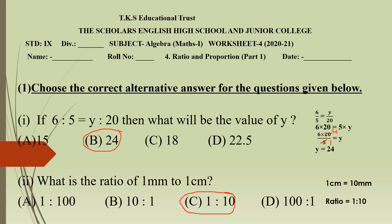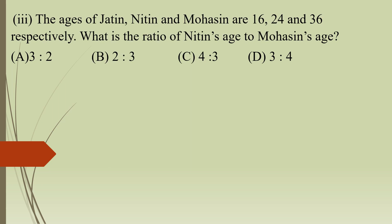Now let's move to the next question. In the third question, the ages of Jatin, Nithin, and Mohsen are 16, 24, and 36 respectively. What is the ratio of Nithin's age to Mohsen's age? Nithin's age is 24 and Mohsen's age is 36, so the ratio is 24 is to 36. Both are divisible by 12: 24 divided by 12 and 36 divided by 12. The answer in simplest form is 2 is to 3, so the answer is option B.